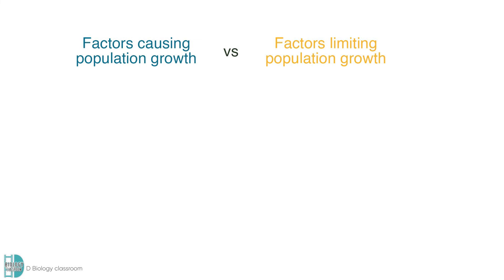As all those factors constantly act on a population of organisms, its growth curve usually looks like this. The population size increases and decreases from time to time, depending on which side has a stronger effect at that moment.